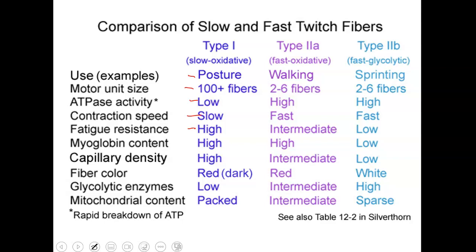Type 2A, the fast oxidative glycolytic fibers, are used for activities like walking. Motor units attach to about two to six fibers — since it's attached to fewer fibers, you have more fine motor control. ATPase activity is high. Contraction speed is fast. Fatigue resistance is intermediate. Myoglobin content is high. Capillary density is intermediate. These appear as the medium red color. Glycolytic enzymes are intermediate and mitochondrial content is intermediate.